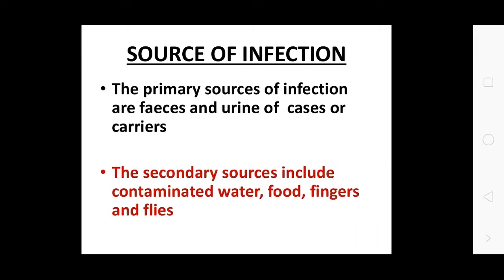Sources of infection: the primary sources are feces and urine of cases and carriers. Secondary sources include contaminated water, foods, fingers, and flies. Contaminated water supply from outside and food consumed outdoors increase infection risk.